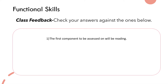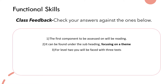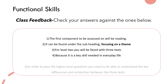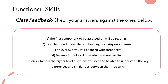Check your answers against the ones below. Number one: the first component to be assessed on will be the reading element. Number two: it can be found under the subheading 'Focusing on a Theme'. Number three: for level two you will be faced with three texts — all on the same or similar theme, however their viewpoints will differ ever so slightly. Number four: because it is a key skill needed in everyday life. Number five: in order to pass the higher level questions you need to be able to understand the key differences and similarities between the three texts.